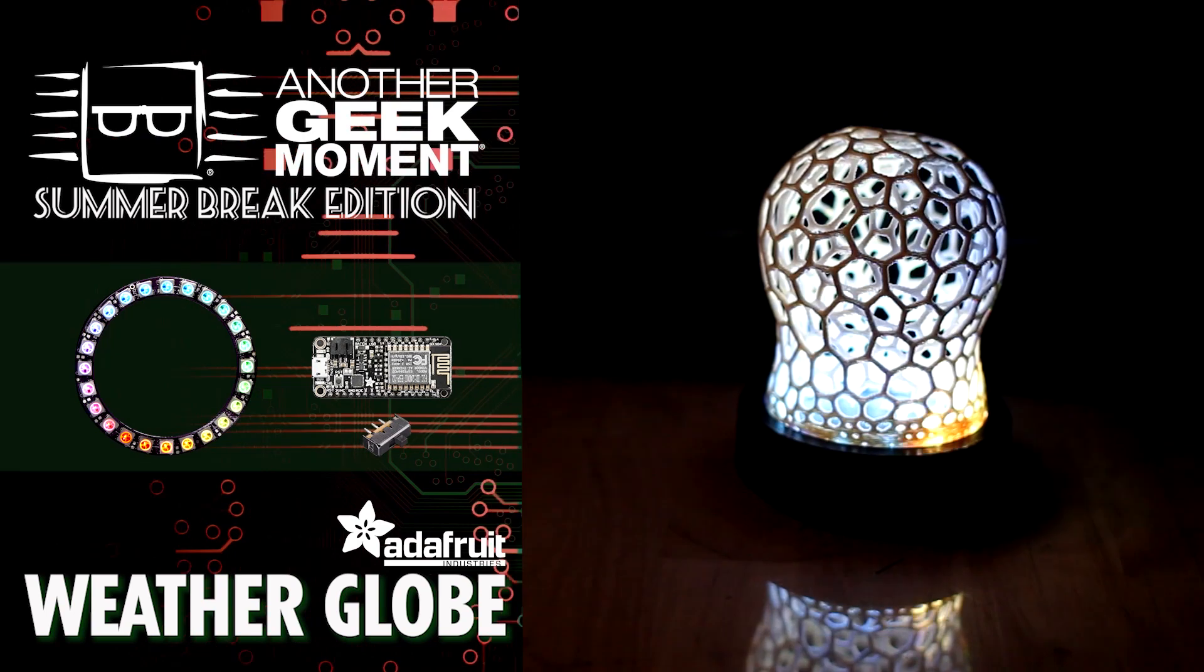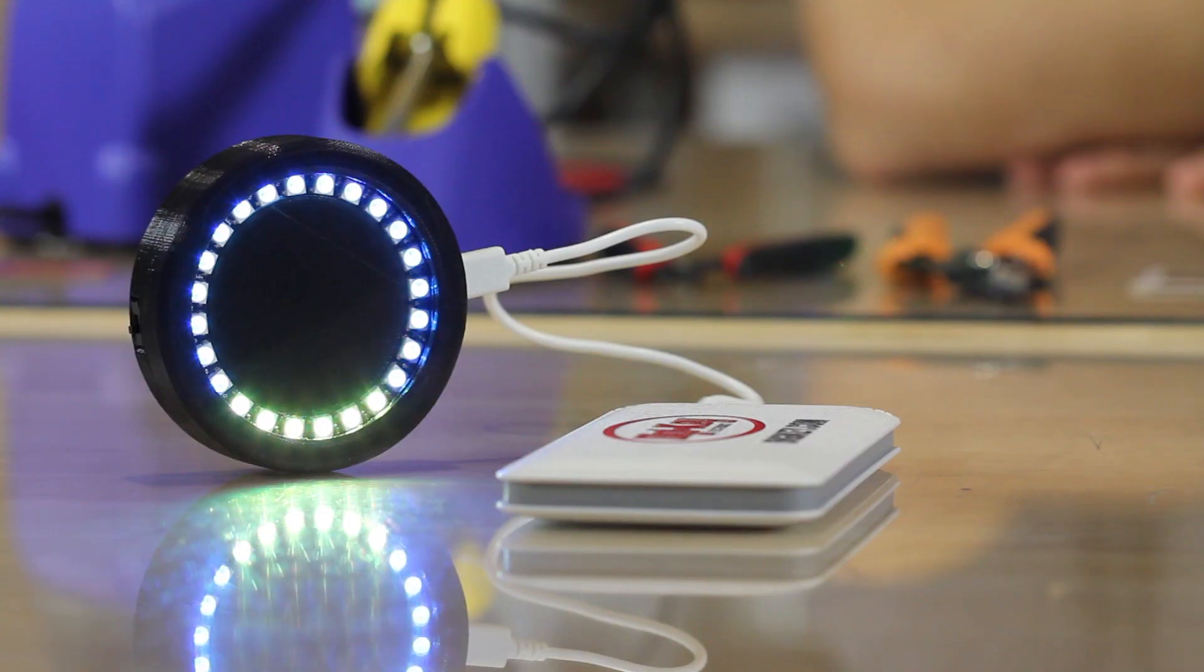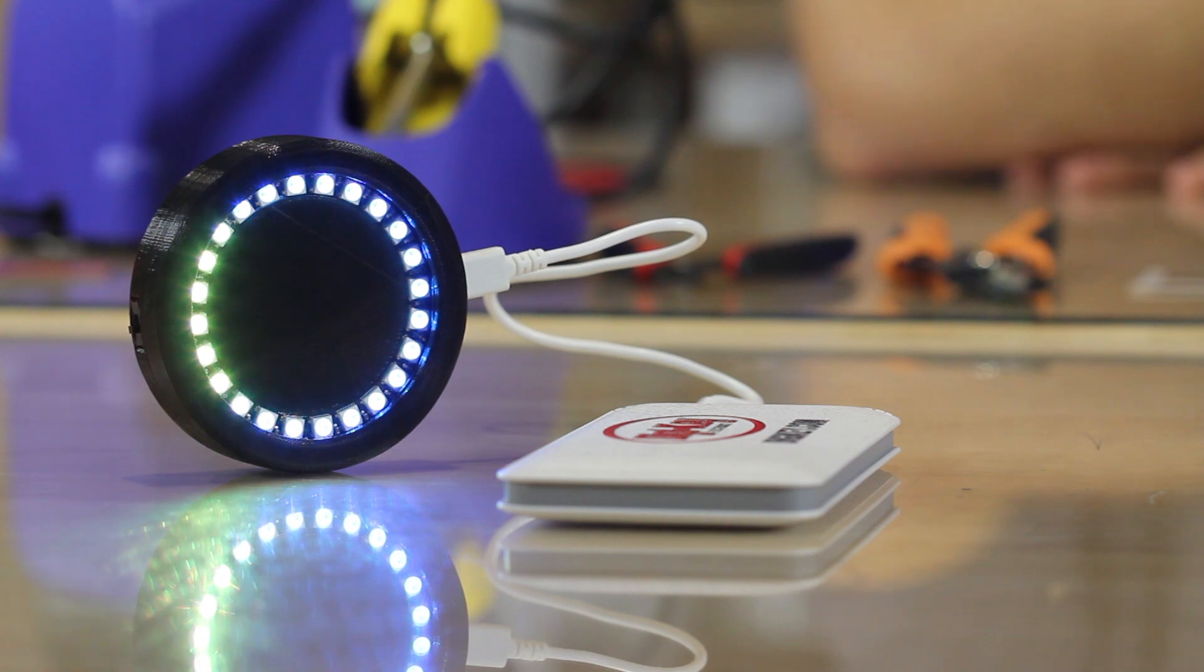Today we are going to build the Weather Globe. The Weather Globe uses a Wi-Fi chip and a NeoPixel ring to display the current weather of any city or town on the globe.